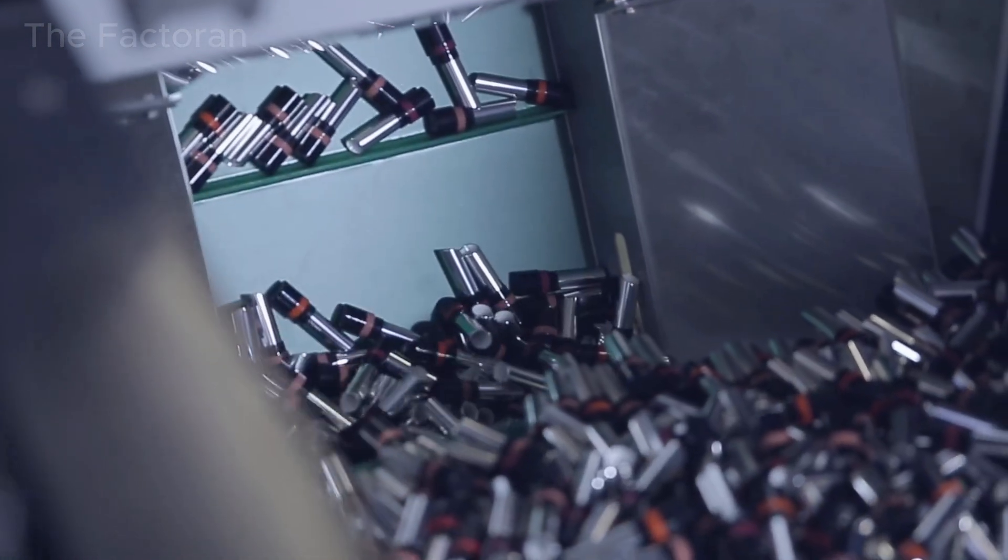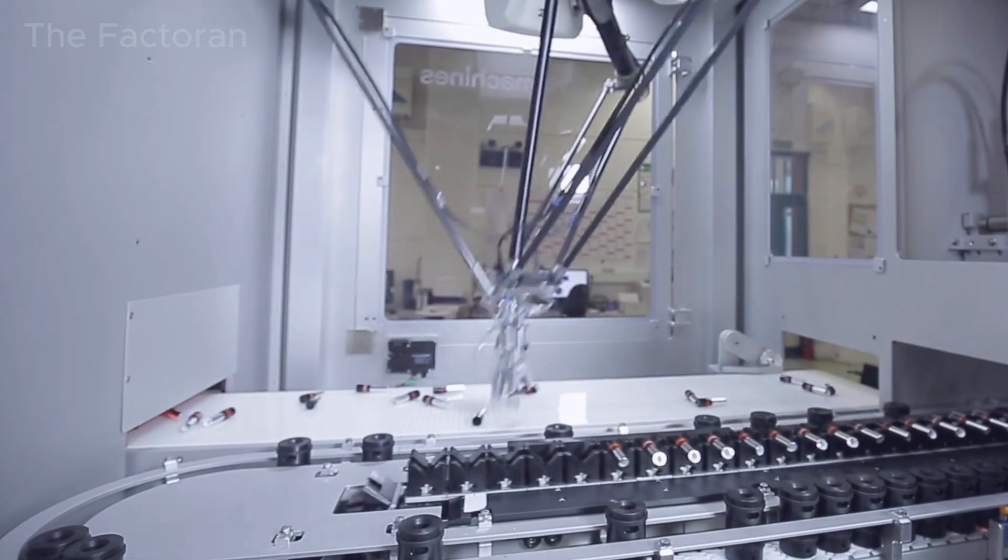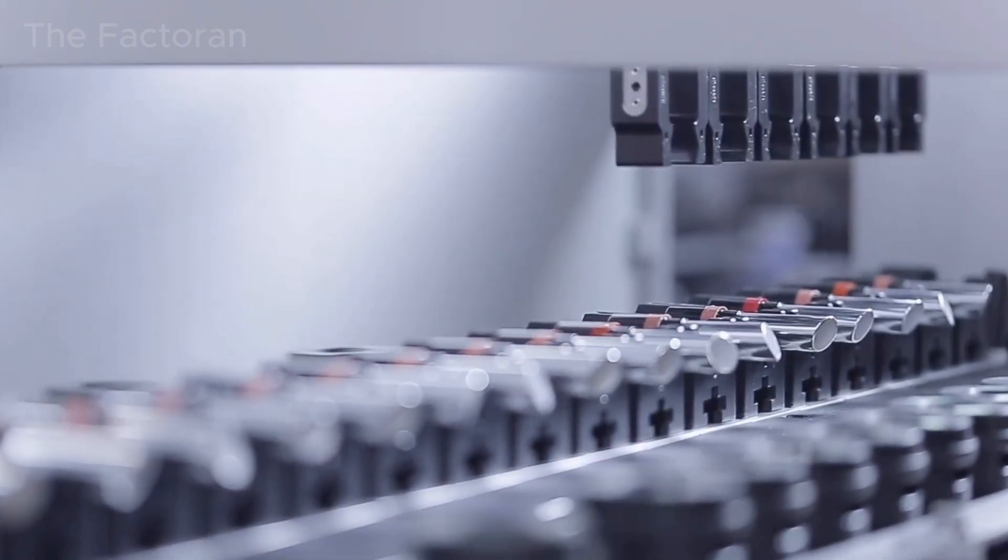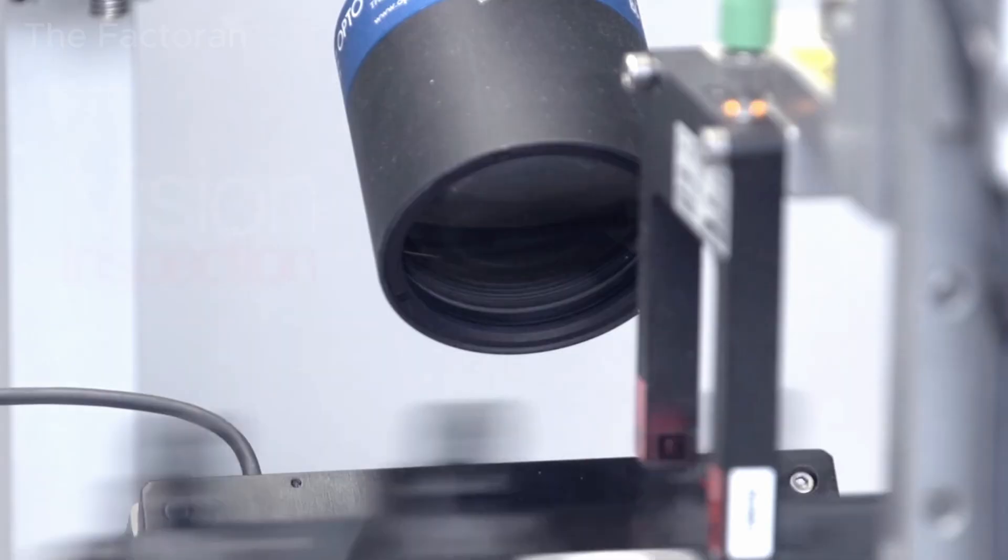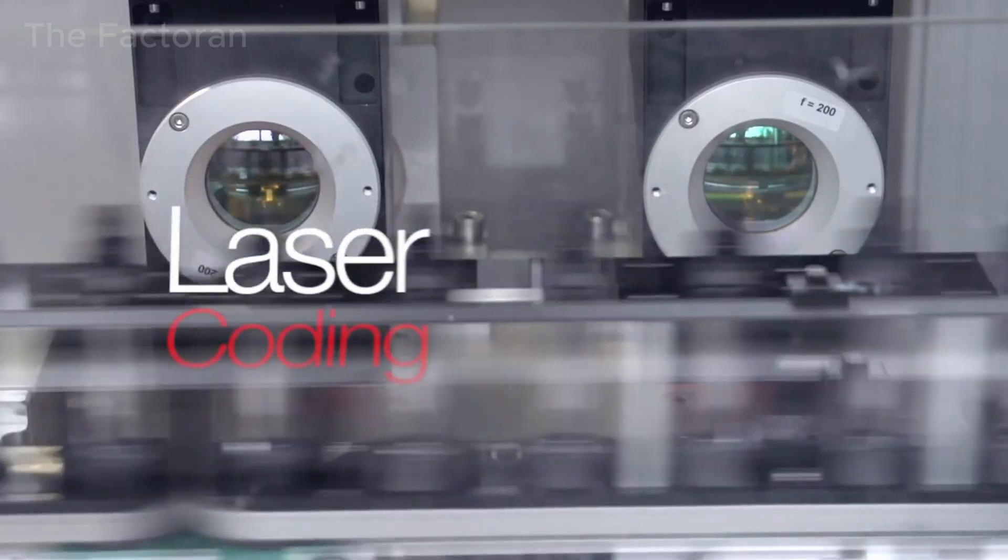Before filling begins, empty lipstick cases are automatically picked up by robotic grippers, lifted one by one, rotated and aligned in the same orientation, before being placed onto the conveyor and fed into an automated inspection module. At this stage.